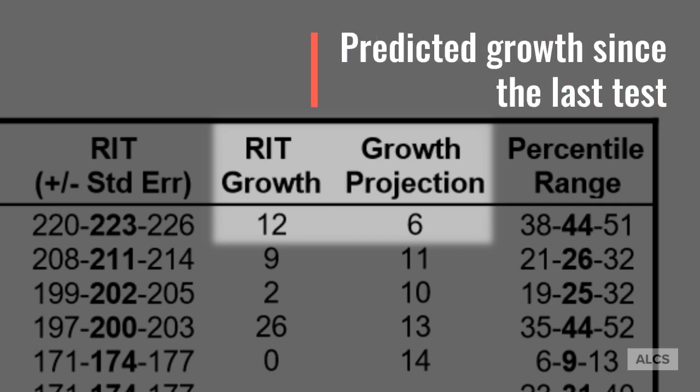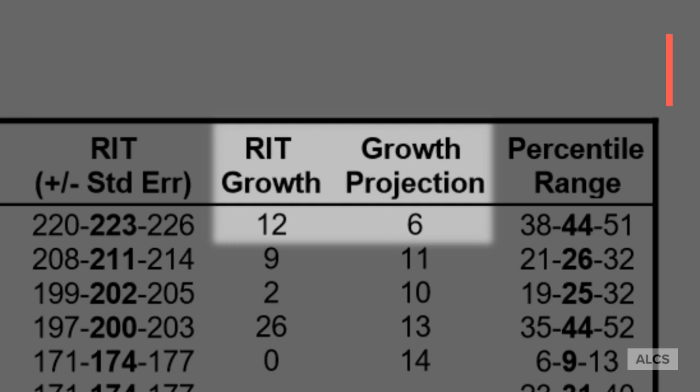The growth projection chart is a measure of how the student's score was predicted to grow based on the student's performance on previous tests. In this case, the student's score in spring 2019 was projected to grow by six points, which means this student substantially exceeded his or her expected progress by improving 12 points.